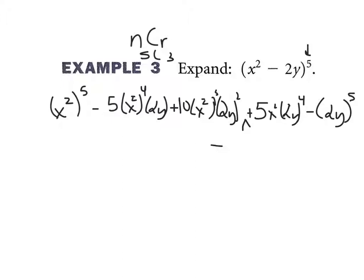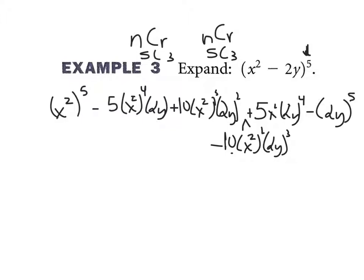I have one more term — the x squared cubed with 2y squared term. To find my coefficient, I'm going to use the NCR button on the calculator. N is the main exponent, which is 5. R is going to be one of the exponents — either 3 or 2, it doesn't matter which one you pick, you get the same answer. So I punch in 5 C 3 and I get 10. So my coefficients are 1, 5, 10, 10, 5, 1 — which is what we had last time.